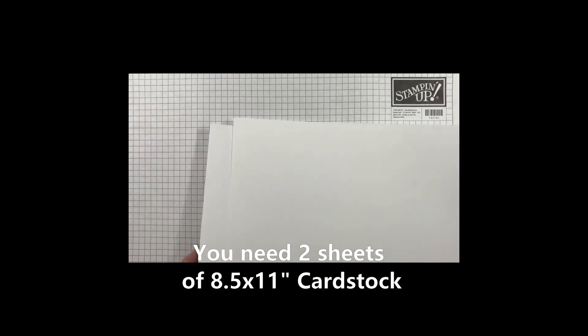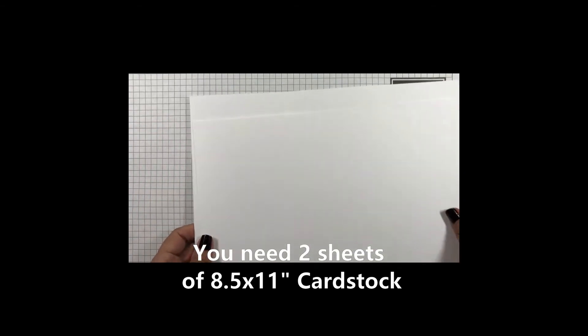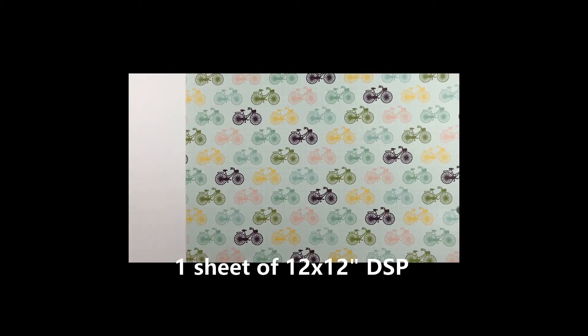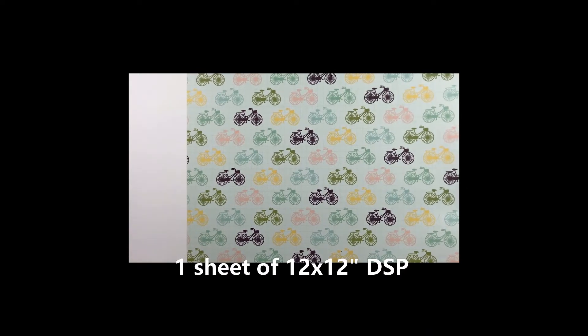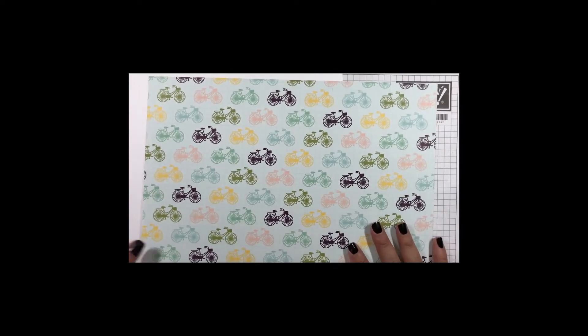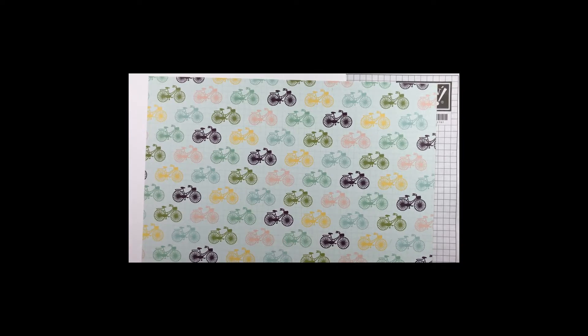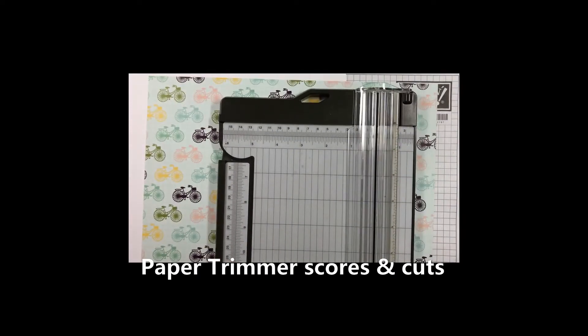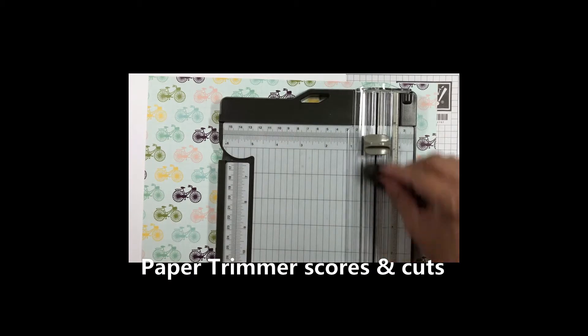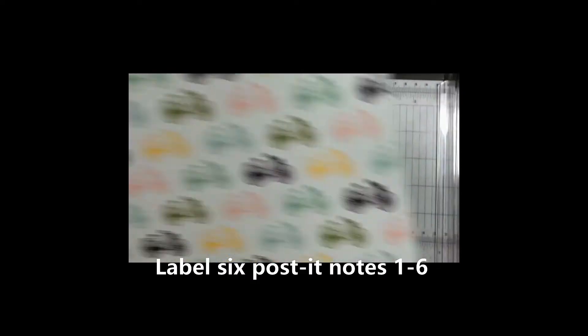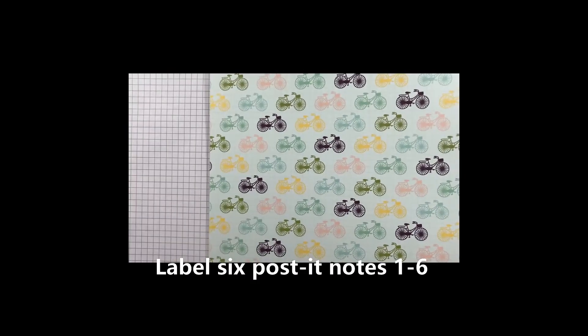You're going to need two sheets of eight and a half by eleven cardstock, and I'm going to show you how to cut it. You're going to need one sheet of DSP for this entire project and I'm going to show you how I cut the DSP to enable you to create this project really quickly so you can do a ton of these really fast.